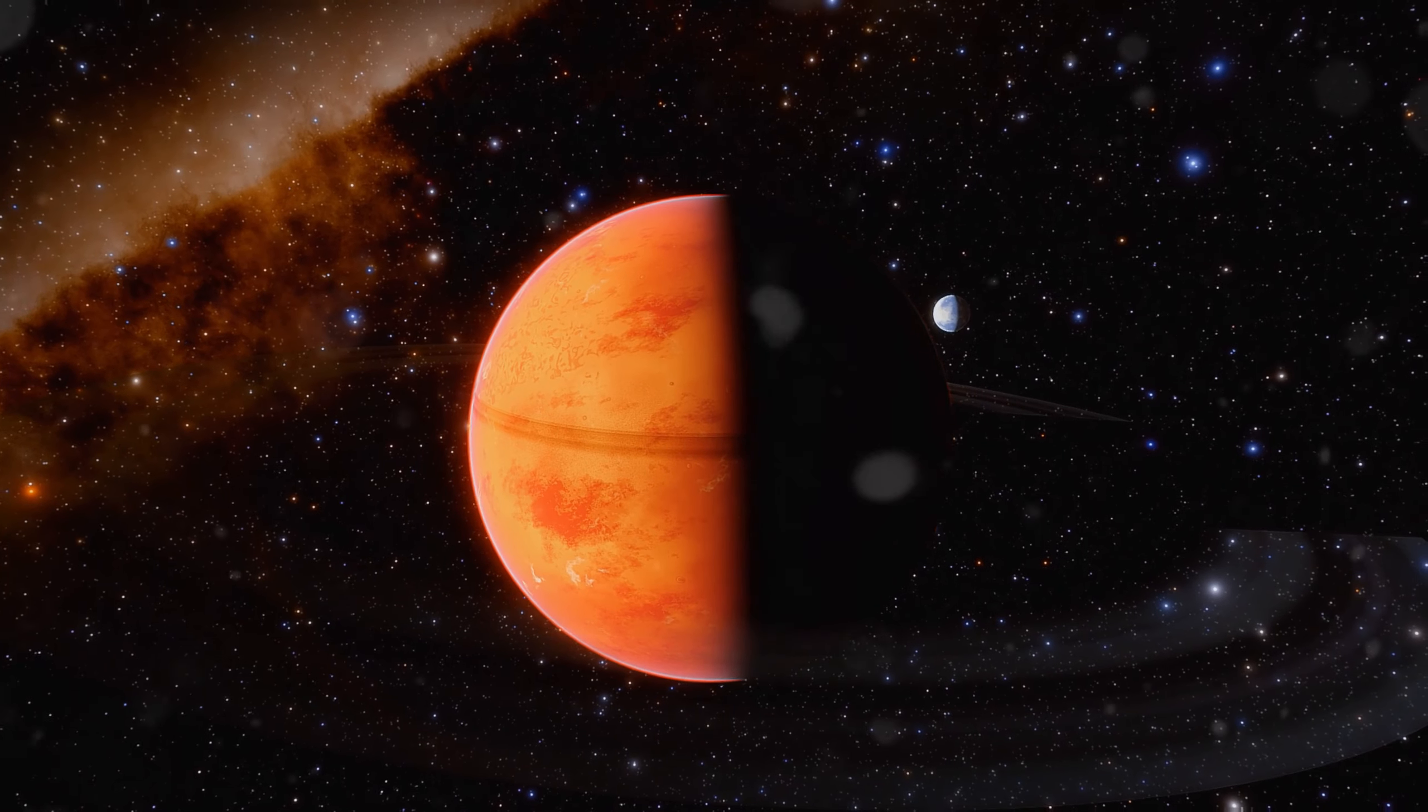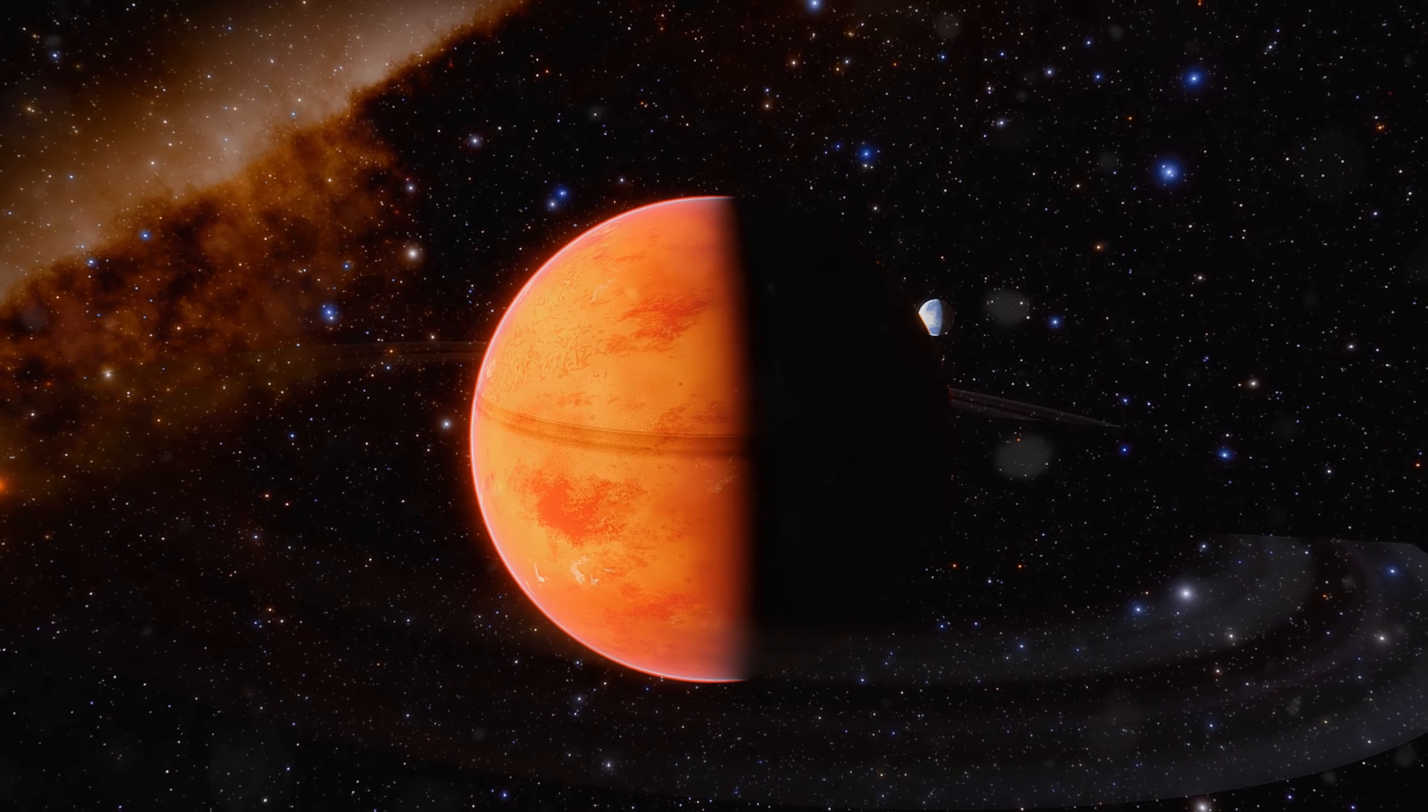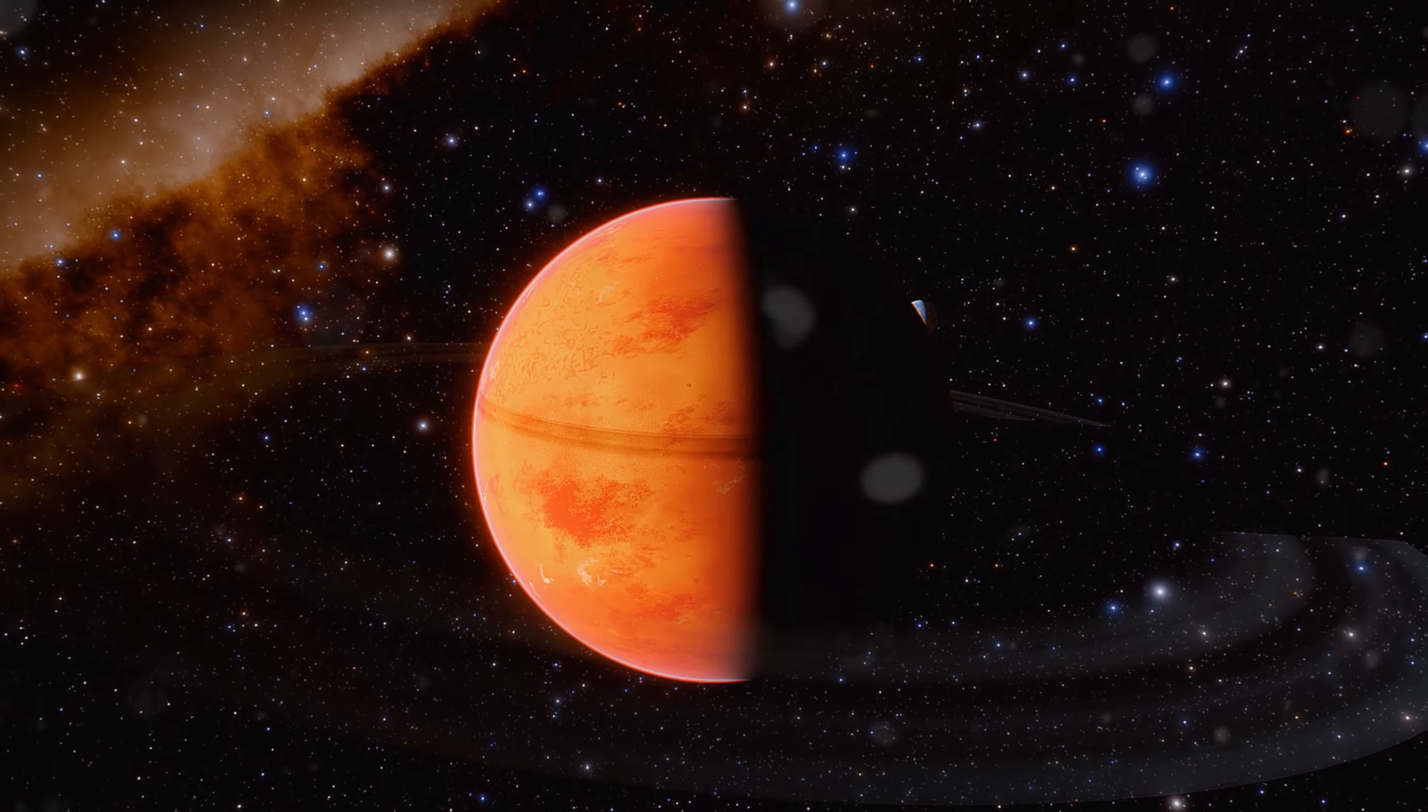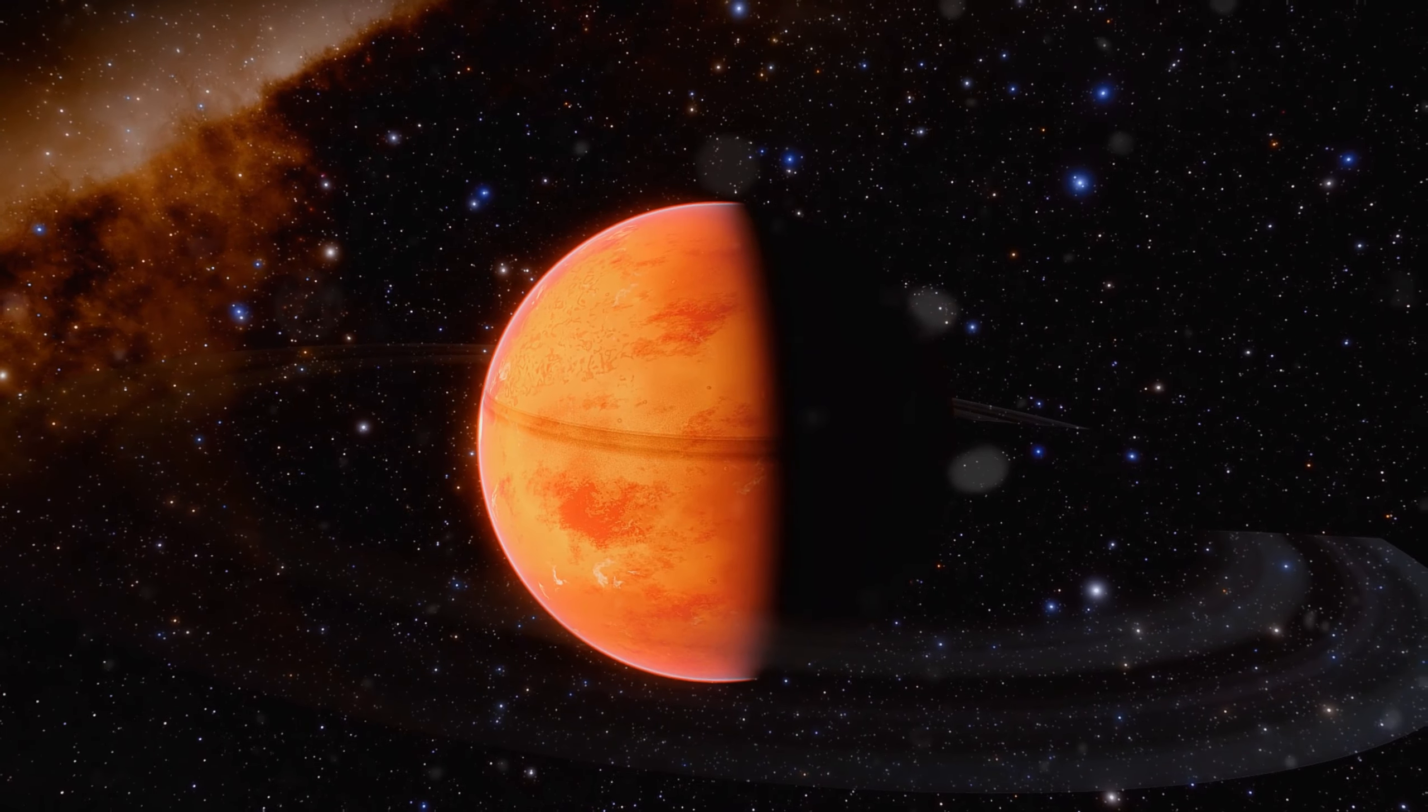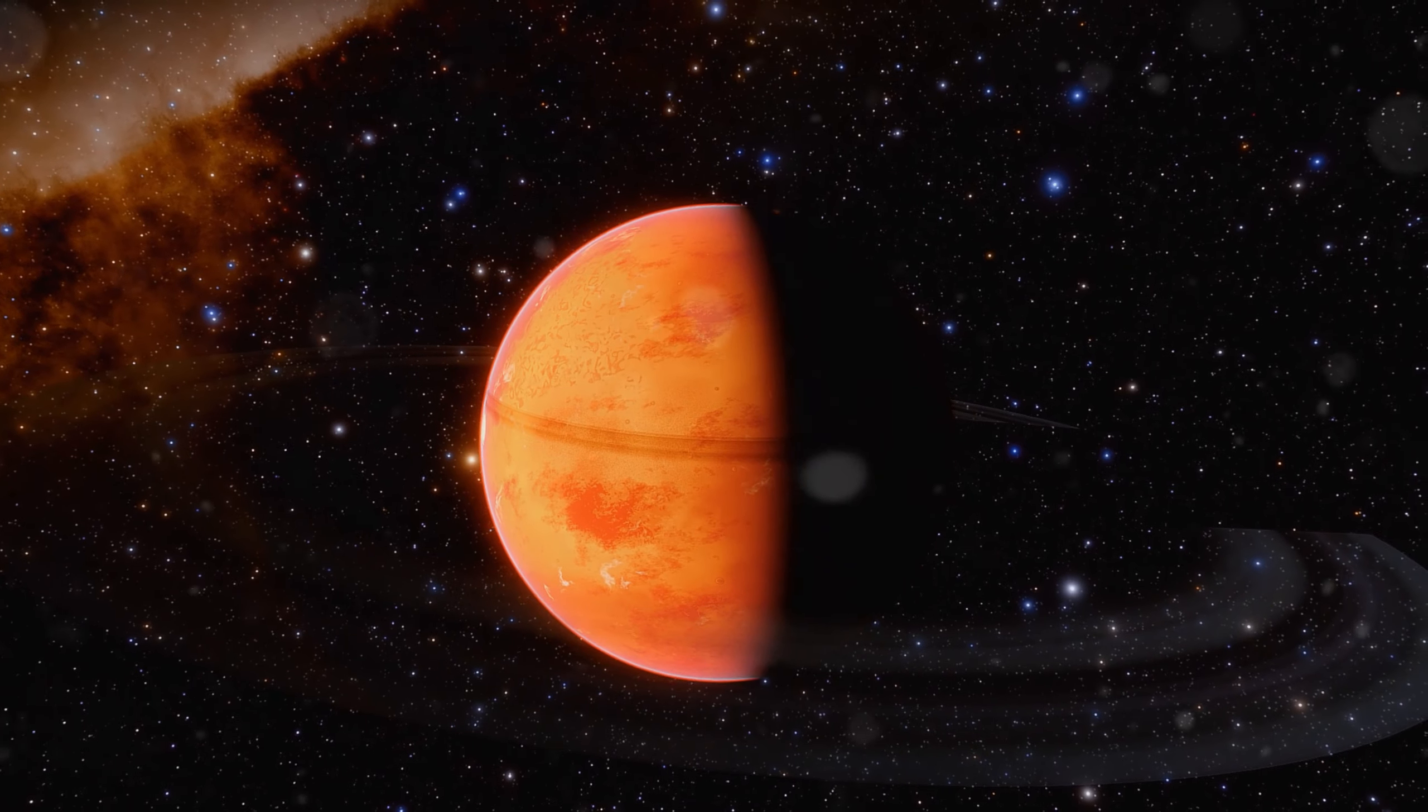Right now we only have one defense plan. Asteroids must be diverted from their orbit. NASA's DART mission demonstrated that this is possible by successfully moving the small asteroid Dimorphos from its old orbit around the larger asteroid.